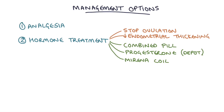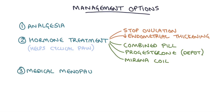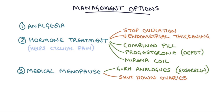These hormonal methods help with cyclical pain but may not help with pain relating to adhesions. Cyclical pain also tends to improve after menopause, so another option is to induce a medical menopause. This can be done with GnRH analogs such as goserelin, commonly known as Zoladex injections. These shut down the ovaries temporarily, completely stopping the whole menstrual cycle, which can significantly improve cyclical menstrual pain.